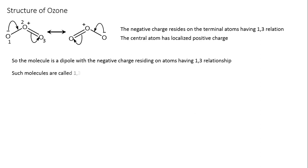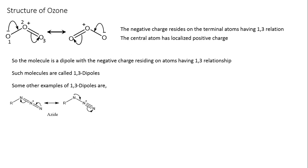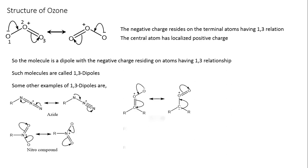So the molecule is a dipole with a negative charge residing on atoms which have a 1,3 relationship. Such molecules are known as 1,3-dipoles. There are some other examples of 1,3-dipoles or 1,3-dipolar compounds. One of these is azide. Others are nitro compounds, nitrones, and diazo compounds. Moreover, there are many other examples of dipolar molecules.